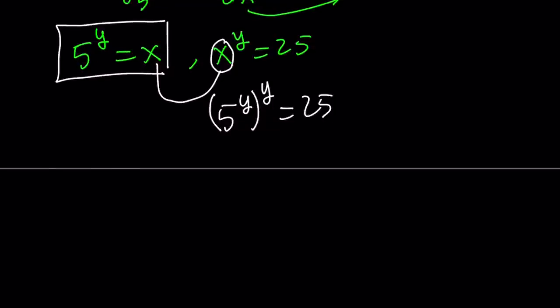y times y is y squared. So we can write this as 5 to the power y squared equals 25. But 25 can be written as 5 to the second power. So now we have an equality and the bases are equal. What is that supposed to mean? It means the exponents are equal. So we have y squared equals 2.